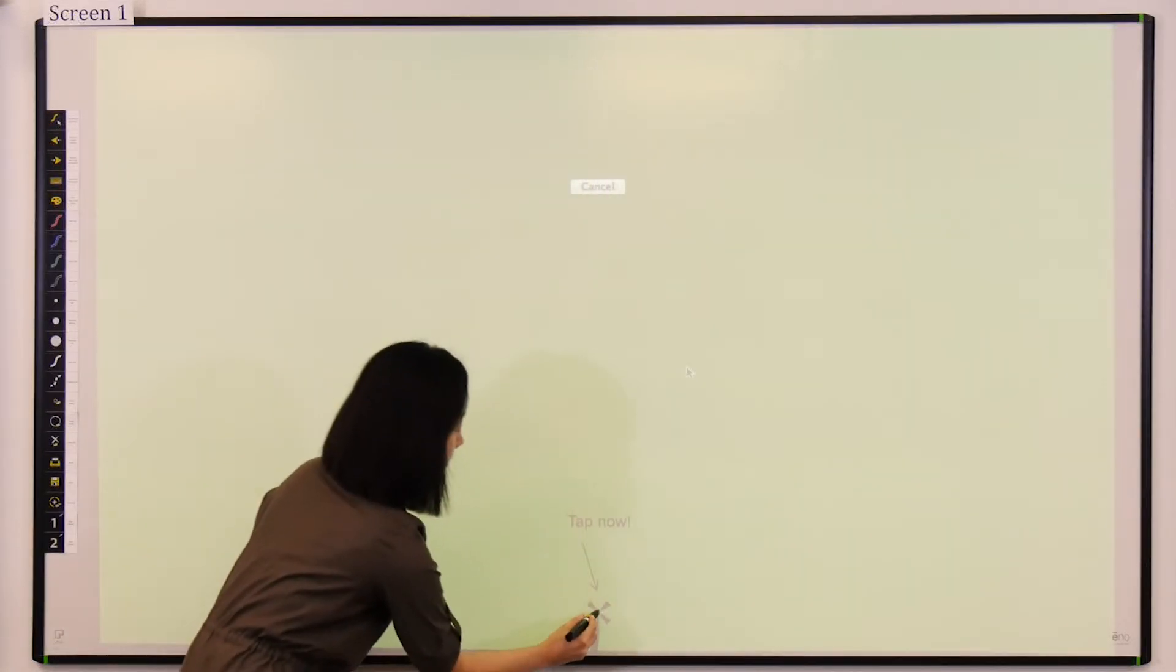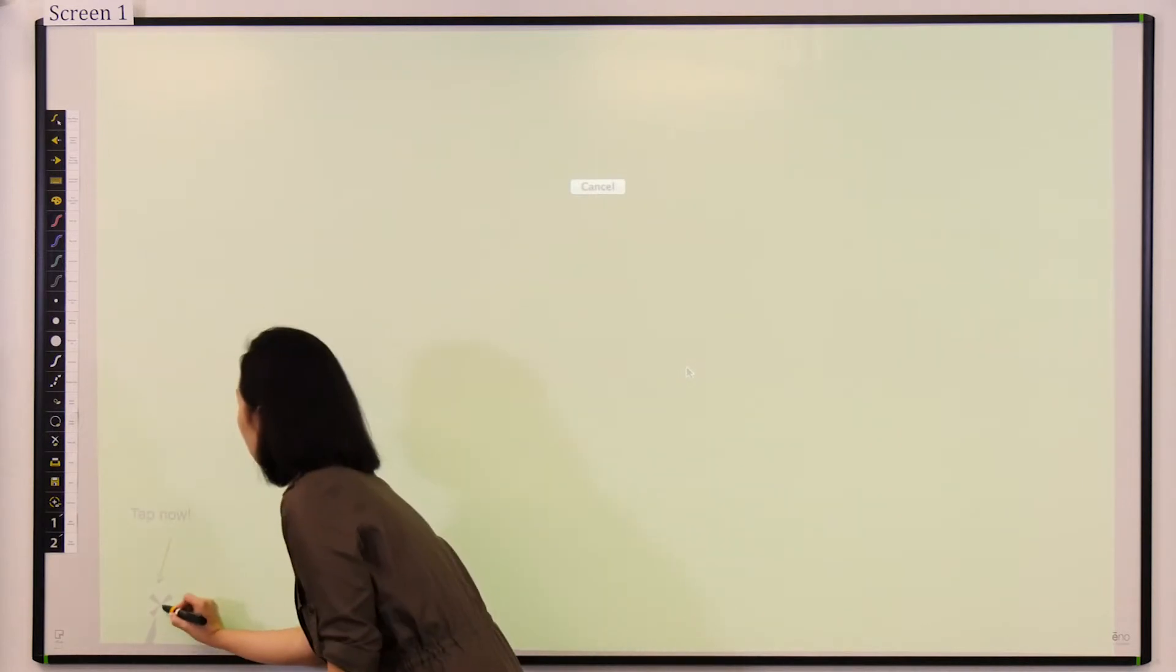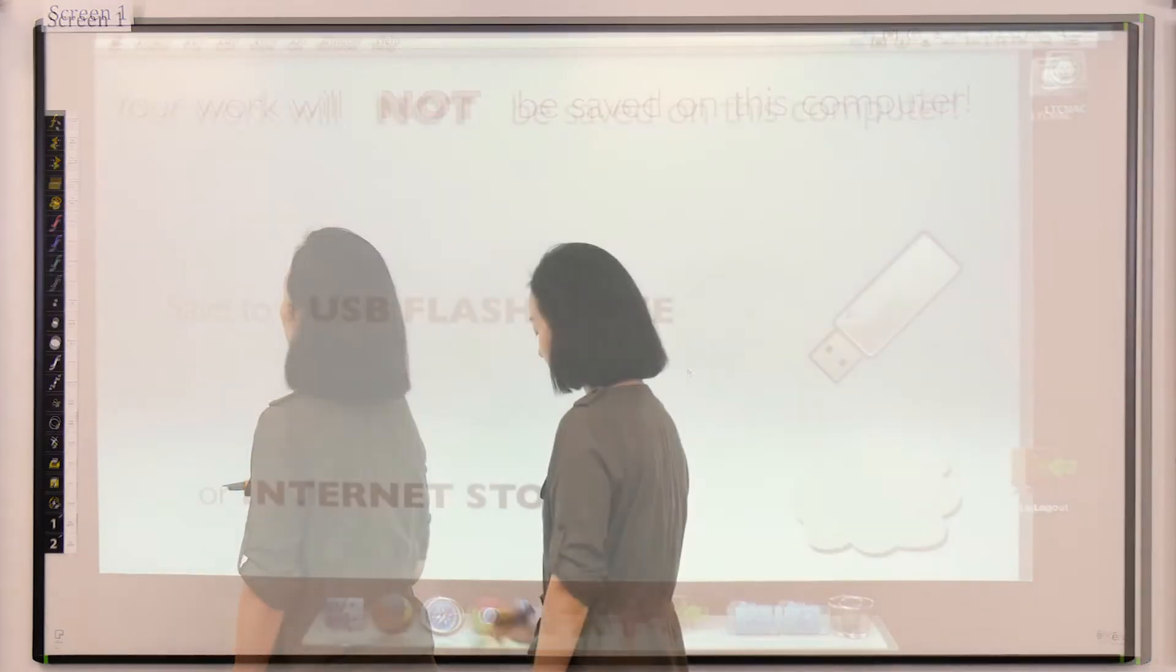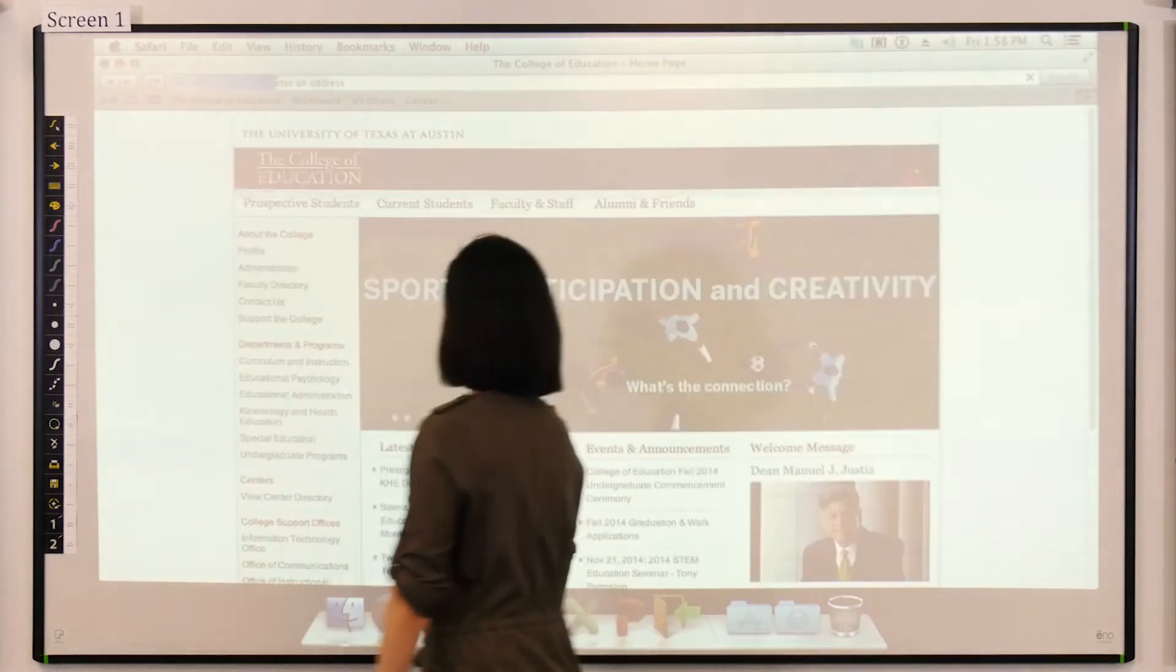You then need to press each crosshair that appears with the pen. This process calibrates the pen with the board. Once calibrated, the pen will act like a mouse.